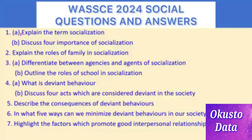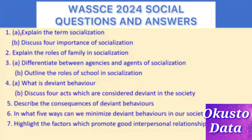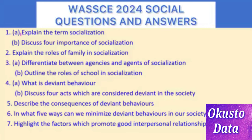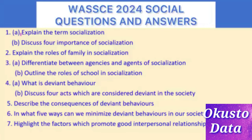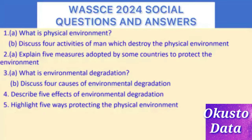Question 4: (a) What is deviant behavior? (b) Discuss four acts which are considered deviant in the society. Question 5: Describe the consequences of deviant behaviors. Question 6: In what five ways can we minimize deviant behaviors in our society? Question 7: Highlight the factors which promote good interpersonal relationship.